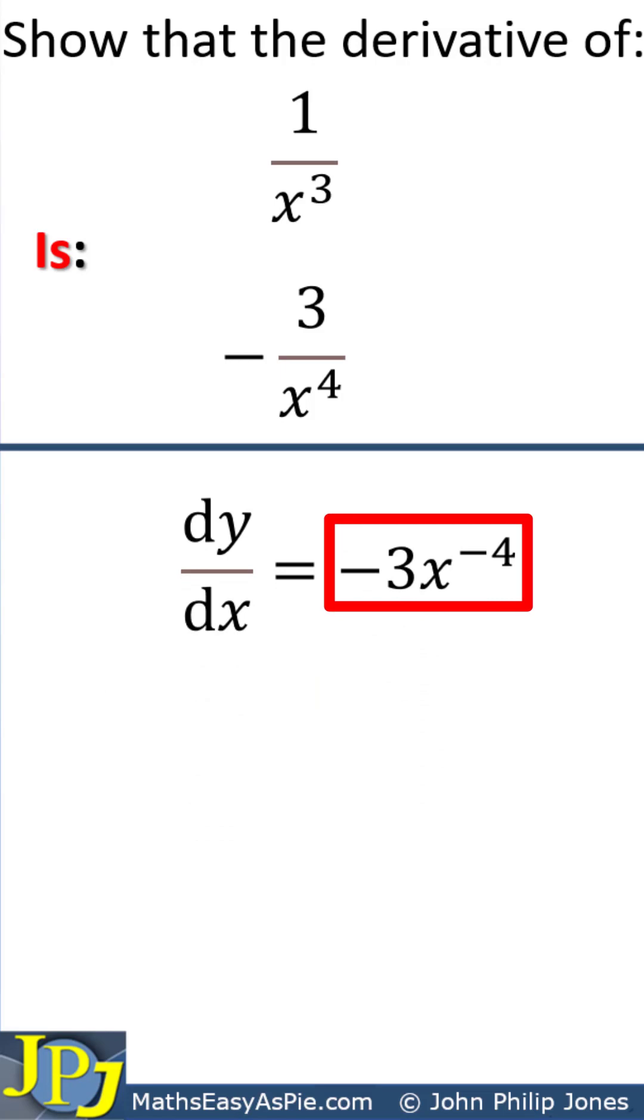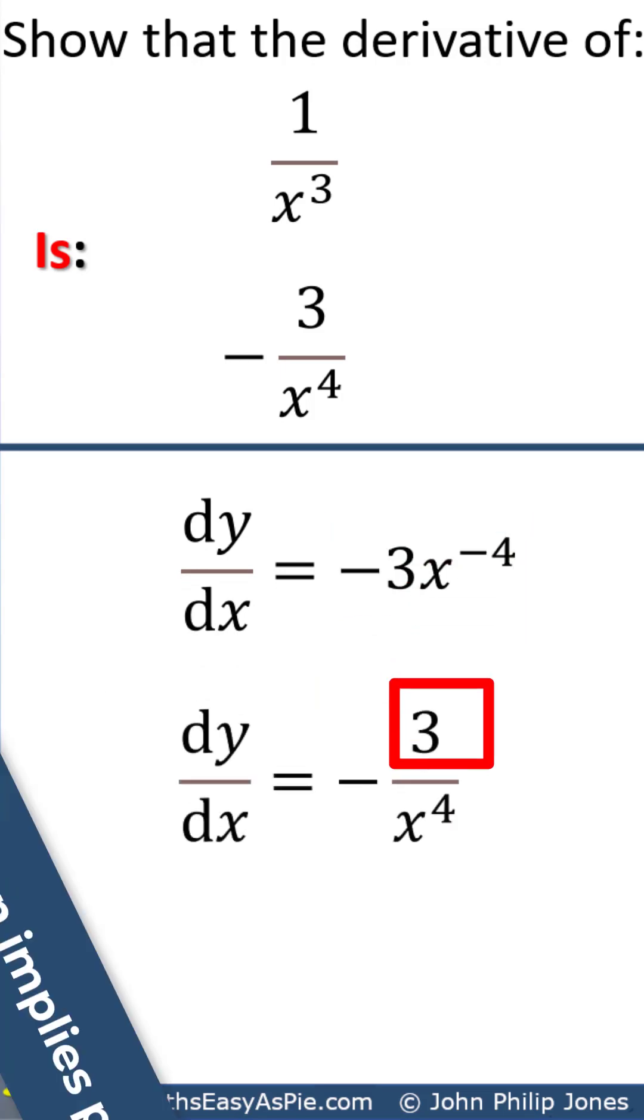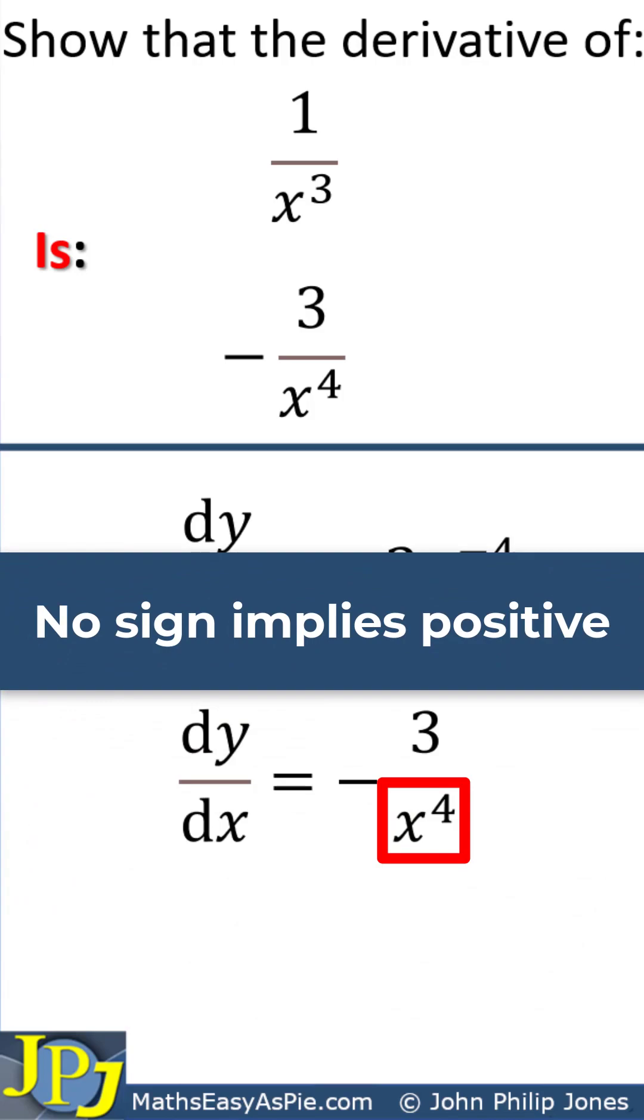we can take this x^(-4) to the denominator position shown here and change the sign to positive.